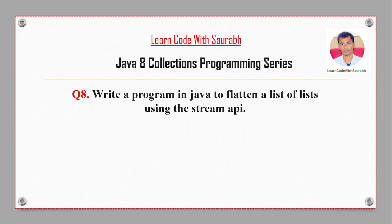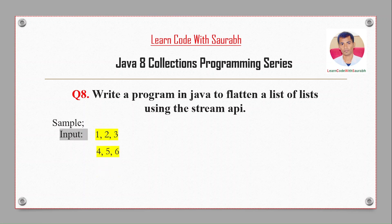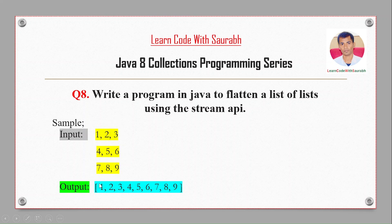Hi friends, welcome back to another video. Today I'm going to write a program in Java to flatten a list of lists using the Stream API. For example, we have inputs: list one has one, two, three; list two has four, five, six; list three has seven, eight, nine. After executing the program, the output will be a single flat list: one, two, three, four, five, six, seven, eight, nine.